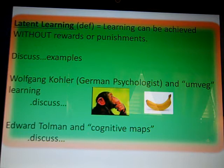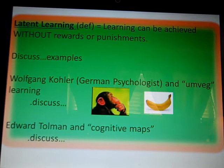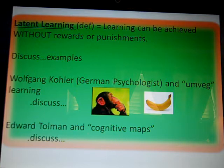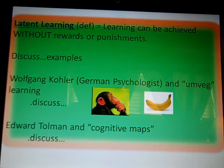Let me give you an example of latent learning. The cognitive psychologists coming along said it's not all about punishment, reinforcement, or instinct. Wolfgang Kohler said that people and animals sometimes learn in what's called an umweg — a German word that literally translates to 'roundabout.' We learn in a roundabout way by thinking about things. He set up a situation where he had a chimp placed in a novel, brand new situation he had never been in before.